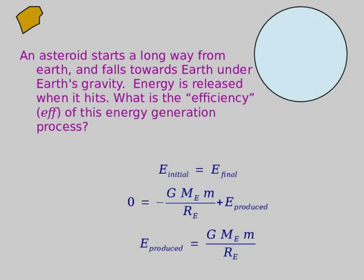Here's one more interesting way to generate energy — by dropping rocks on something, which sounds weird, but it's a way to generate energy, and you can do things like make the dinosaurs go extinct with energy like this. Let's imagine an asteroid starts a long way away from the Earth and falls towards it under Earth's gravity. When I say a long way away, that just means that initially the gravitational potential energy was zero, because the gravitational potential energy equation is shown here.